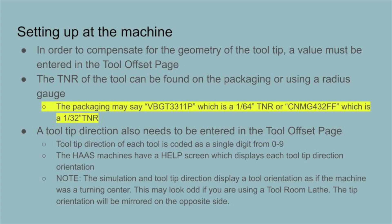To use tool nose compensation, you need to put some parameters into the machine. A value must be entered in the tool offset page under the geometry tool tip. The TNR of the tool can be found on the packaging or using a radius gauge.